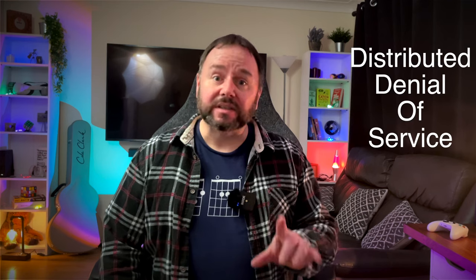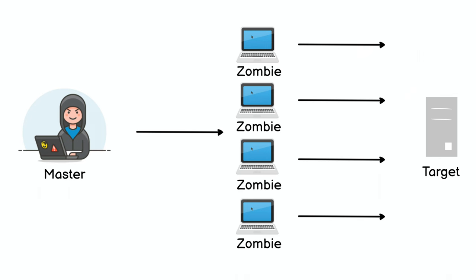A DDoS attack is a distributed denial of service attack. This works in a similar way to a DoS attack, but this time you have many computers trying to flood the server with requests. The attacking computers may either be willing accomplices, which can happen in attacks by hacktivists or groups sponsored by nation states, or they could be unwitting victims whose machines have become infected with malware. These machines are called zombies.